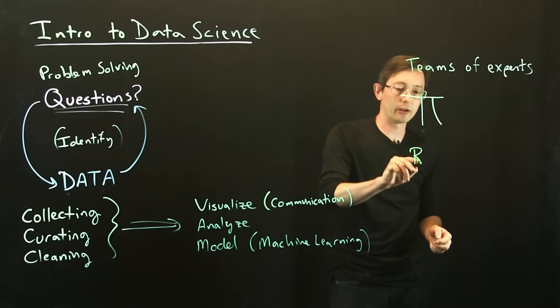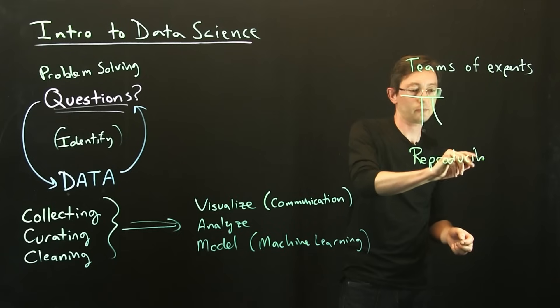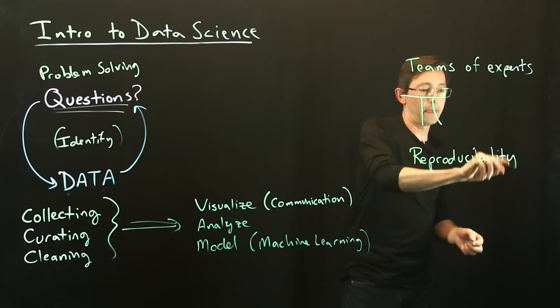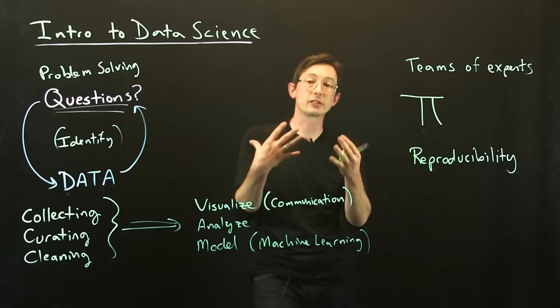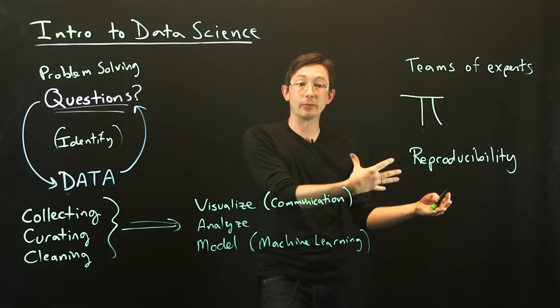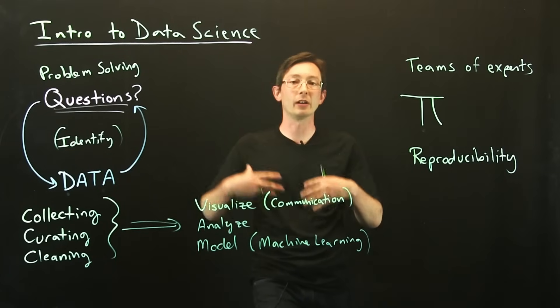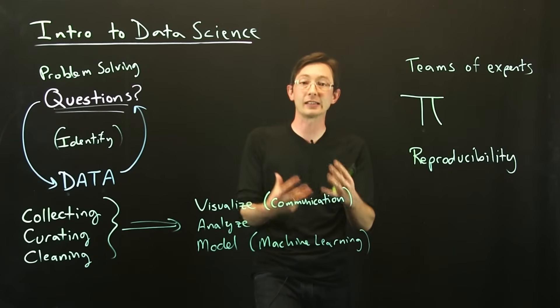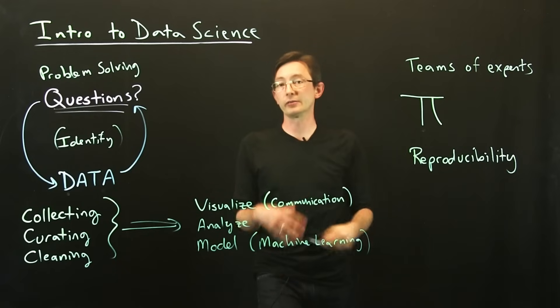Other things that are really important are these aspects of reproducibility. In science, there has been a crisis that lots of results that have been published, when other groups of scientists try to reproduce them, they can't. And that means there's something wrong in the way that we are conducting and conveying scientific data. And so this idea of reproducibility is really ubiquitous.